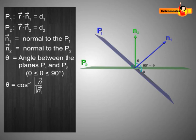Theta is equal to the cos inverse of modulus of the scalar product of vectors N1 and N2 upon product of magnitudes of vectors N1 and N2.